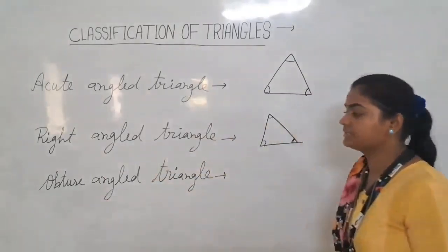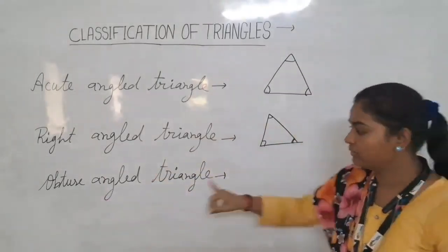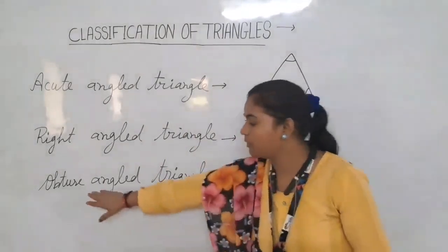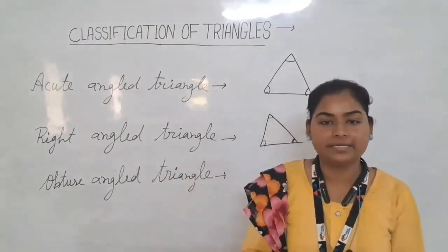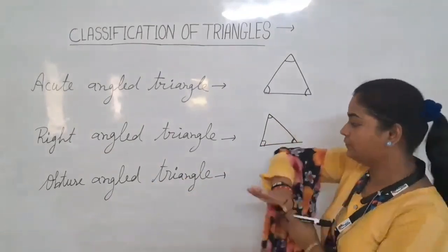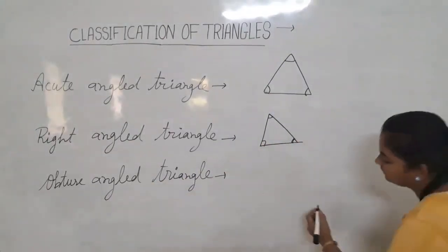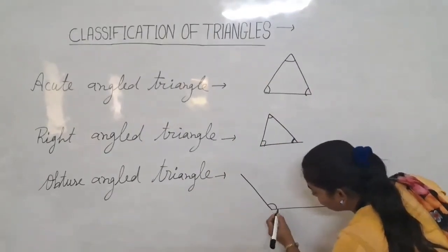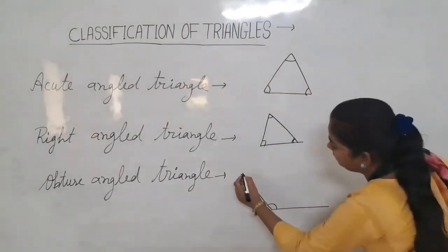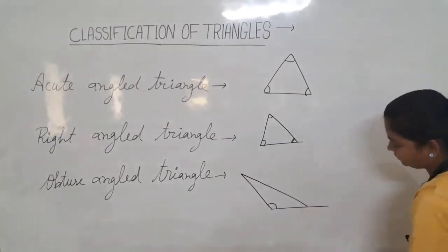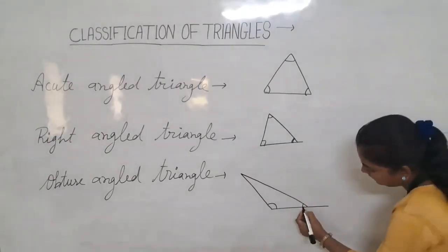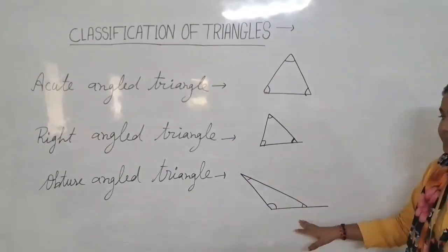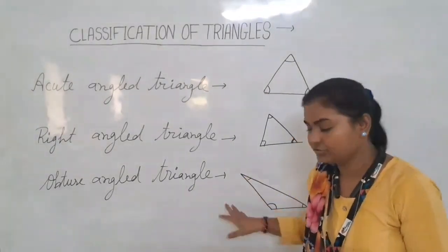Third, we have an obtuse angle triangle. It is based on the obtuse angle. An obtuse angle is greater than 90 degrees. In an obtuse angle triangle, one angle is obtuse — greater than 90 — and the other two angles are acute. It is an obtuse angle triangle.